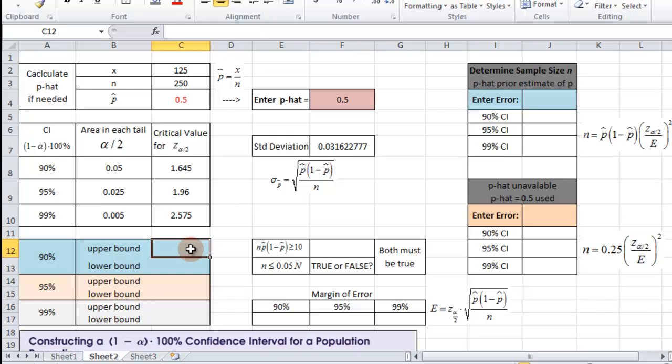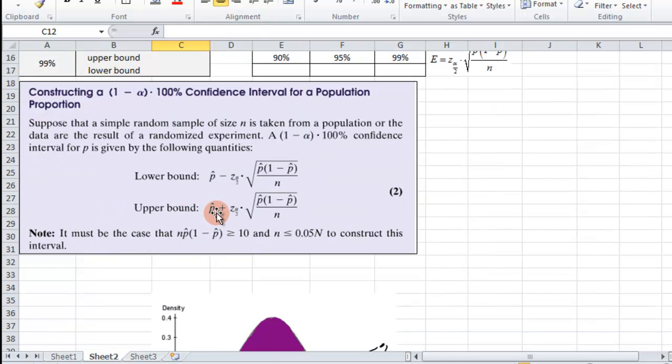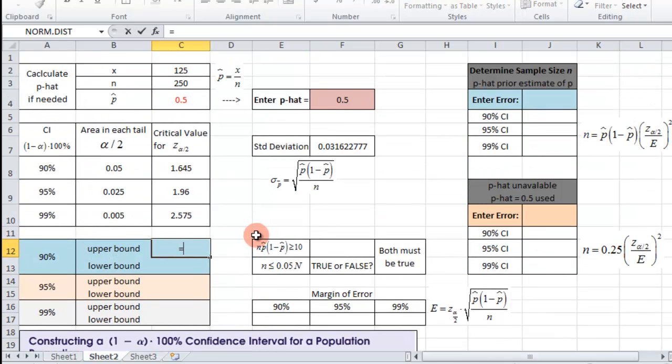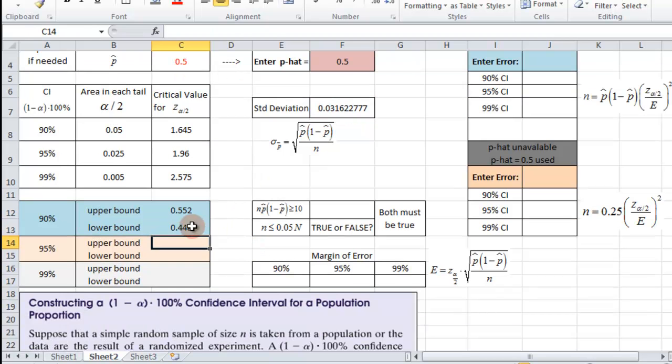Now we're able to make our upper and lower bounds here. P hat plus the critical value times that standard deviation for the upper bound. Equals P hat, again over here, plus we want a 90% confidence, we need the 1.645, and then times the standard deviation. And then for the lower bound, it's the same thing basically, except you subtract the latter portion. P hat, and then minus that times standard deviation.